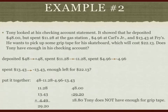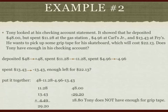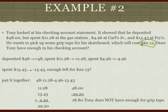Tony looked at his checking account statement and it showed that he deposited $48 but spent $11.28 at the gas station, $4.96 at Carl's Jr., and $13.43 at Price. He wants to pick up some grip tape for his skateboard which will cost $22.13. Does Tony have enough in his checking account? The question is asking: if he buys the grip tape, does he have enough money left?